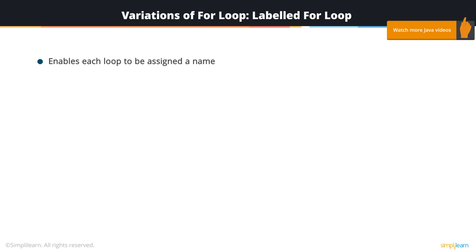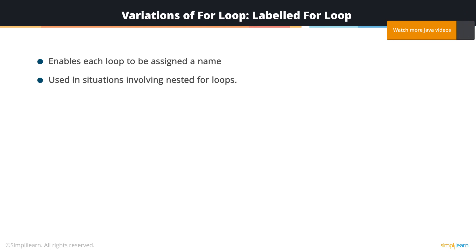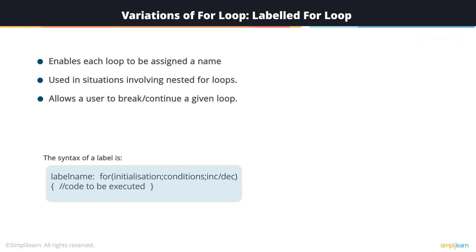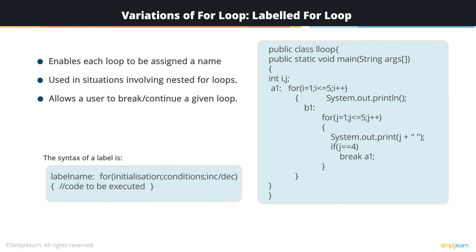This method enables each loop to be assigned a name — label loops. This is particularly useful in situations that involve nested loops, as it allows the user to break or continue a specific loop. In this example, we specify an individual label for each loop. When a break statement specifying a given loop is encountered — in this case the outer loop — execution of that loop (a1) is stopped and exited. The output of the code is also given.